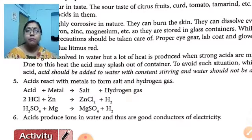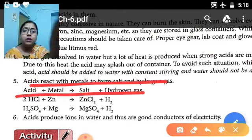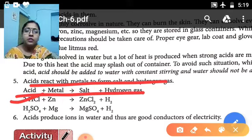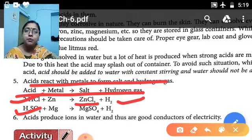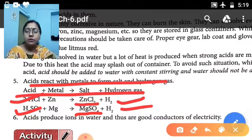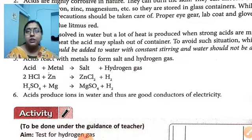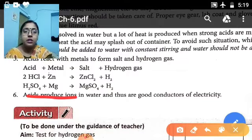Number five: acid reacts with metals to form salt, and hydrogen gas is liberated. For example, hydrochloric acid (HCl) plus zinc (Zn) forms zinc chloride salt and hydrogen gas (H₂). Sulfuric acid (H₂SO₄) reacting with magnesium forms magnesium sulfate salt and hydrogen gas. So hydrogen gas is liberated when acid reacts with metals. Number six: acid produces ions — negative ions and positive ions — and that is why acids are good conductors of electricity.